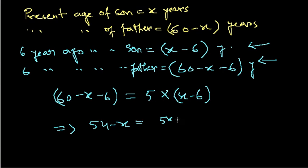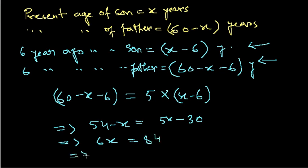So it is 5x minus 30. Taking terms to one side, 6x equals 84. So x equals 14. We get the value of x.